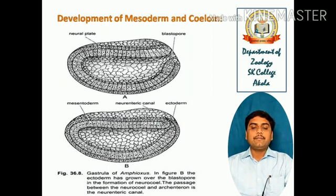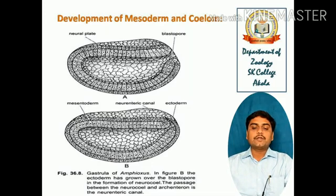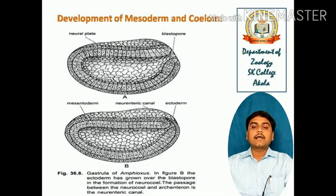The next step is the development of mesodermal layers and coelom formation. In the next diagram showing the neurula of Amphioxus, the ectoderm has grown over the blastopore in the formation of the neurula. The passage between the neurula and archenteron is called the neuroenteric canal. Here the embryo is getting its shape towards the formation of the animal.